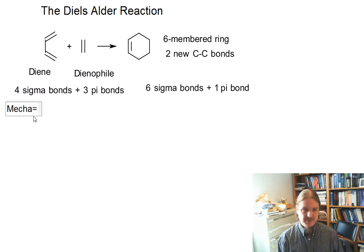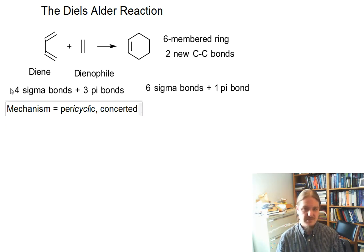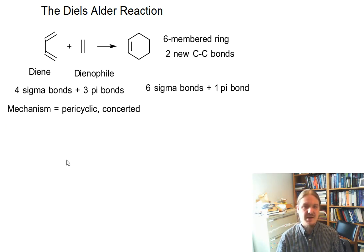Here, coming up, is the general mechanism of this reaction. This is a type of reaction called a pericyclic reaction. Pericyclic means that there is a cyclic transition state. And this reaction is also concerted, meaning that everything happens at the same time.